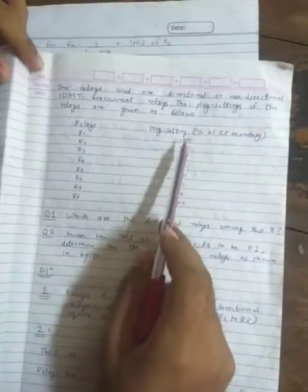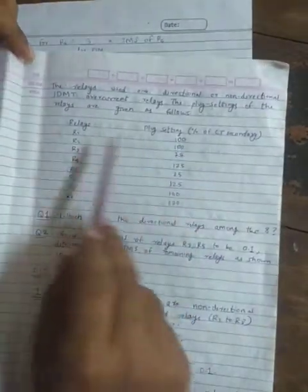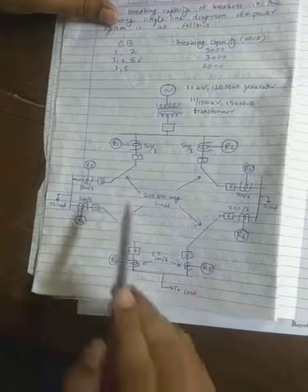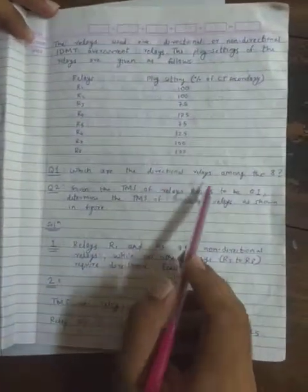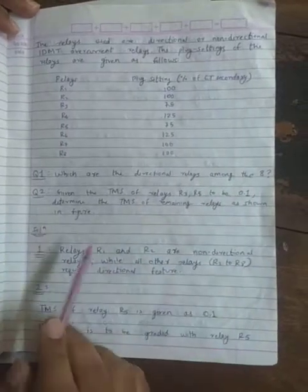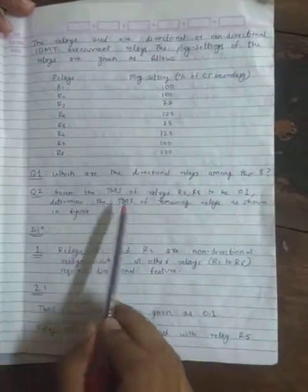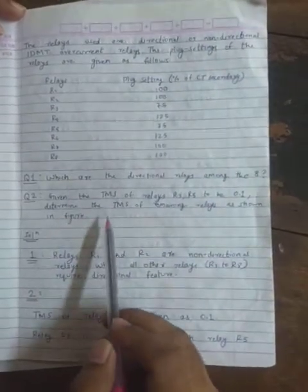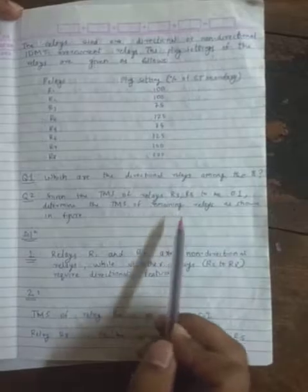Further the question says that the relay plug settings are given: R1 has 100% of CT secondary, R2, R3, R4, R5 and so on up to R8. And the CT ratios for R1, R2, R3, R4, R5, R6, R7, R8 are given over here in the circuit. The question asks which are the directional relays among the 8 relays, and the second question says given the TMS of relay R3 and R5 to be 0.1, determine the TMS of the remaining relays in the figure.